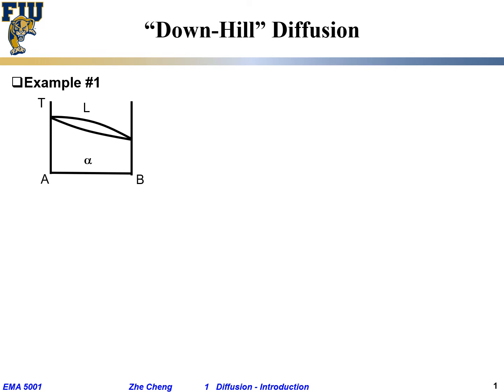The first thing we look at is so-called downhill diffusion. We are looking at a so-called binary phase diagram: left side pure A, right side pure B. Above the liquid line we have a uniform liquid phase; below the solid line we have the uniform solid solution. A solid solution is a uniform single phase between A and B with a certain lattice structure — A and B are randomly mixed together and indistinguishable.